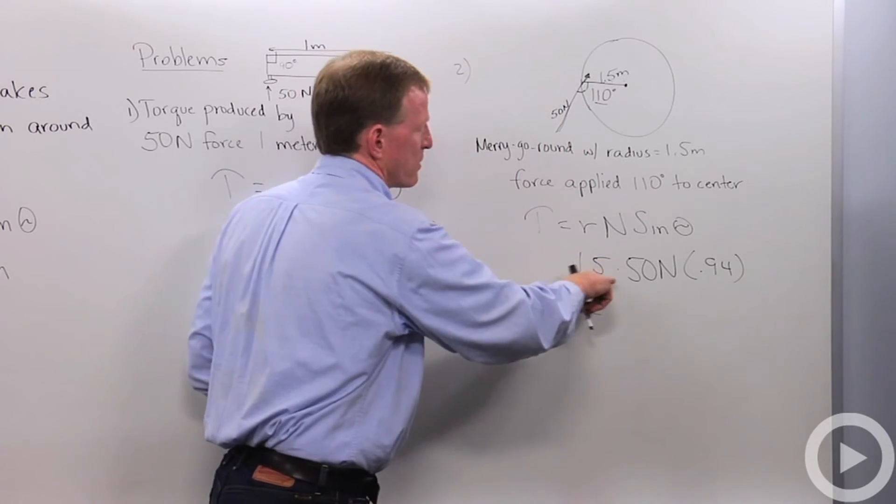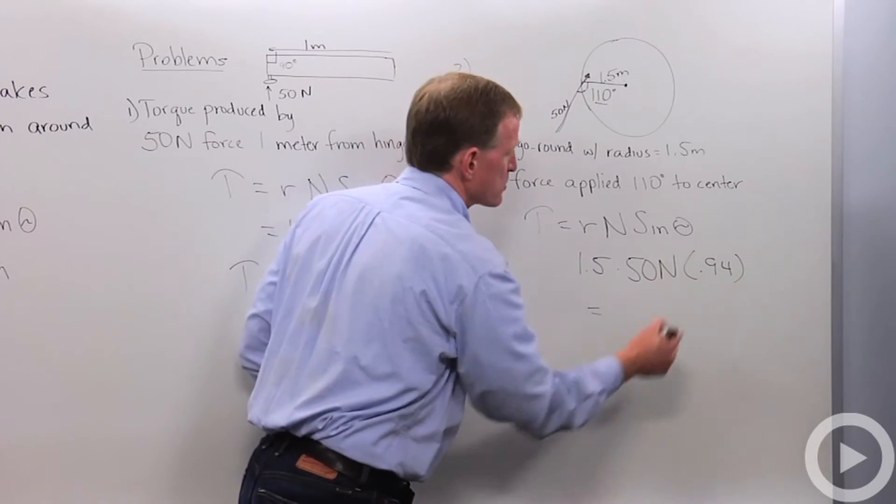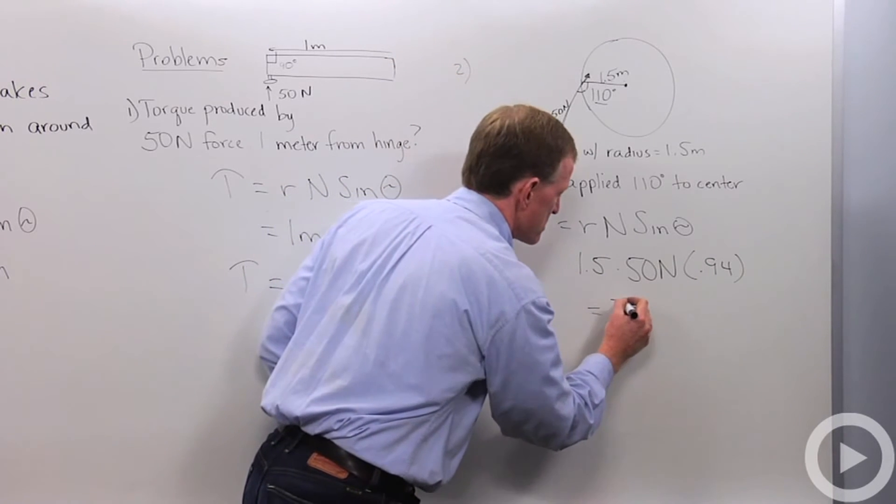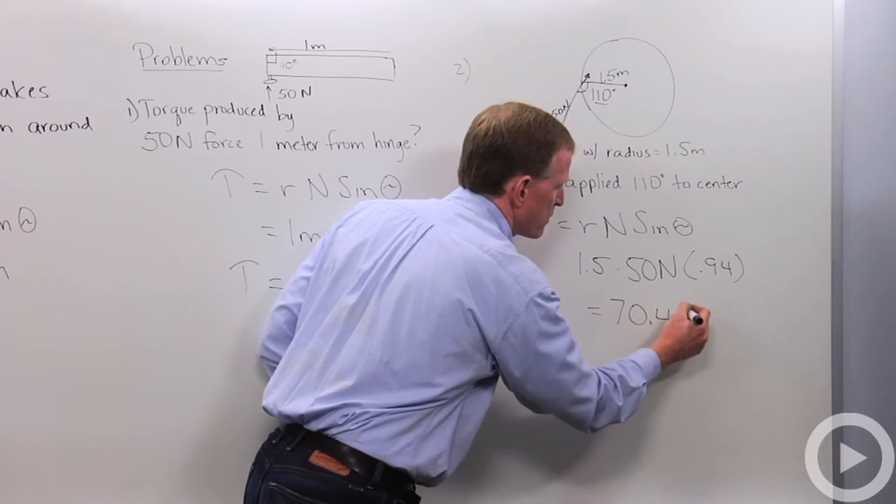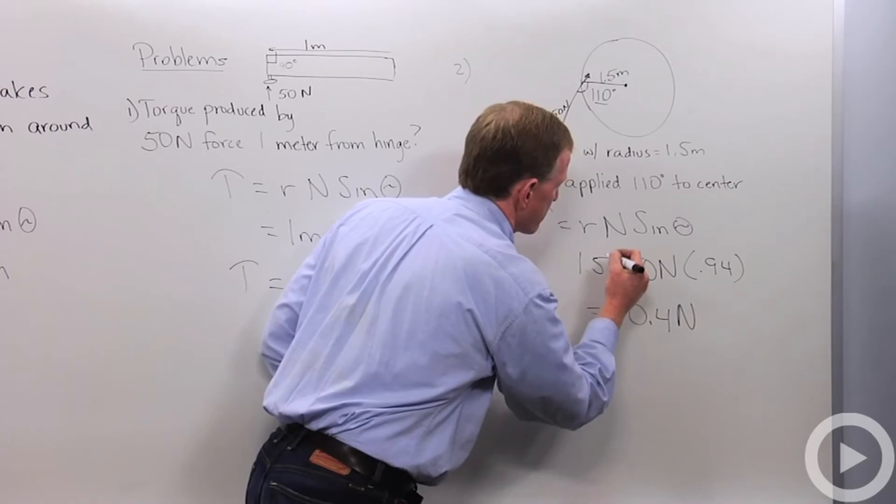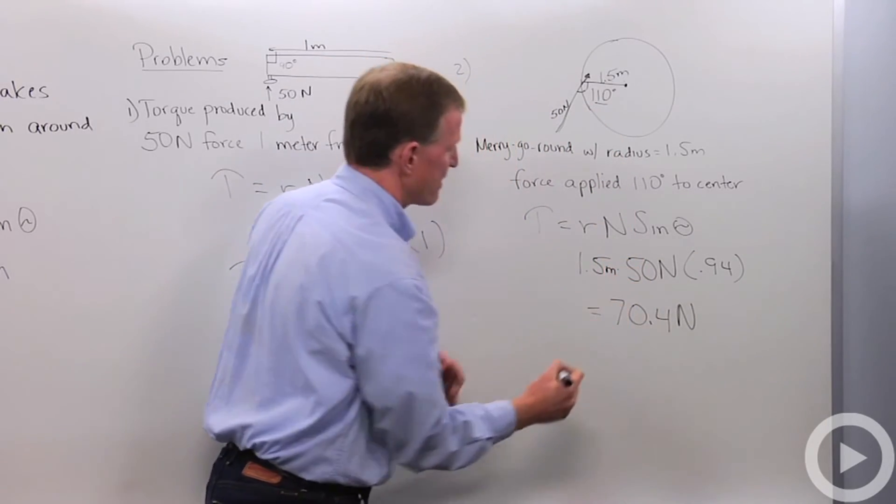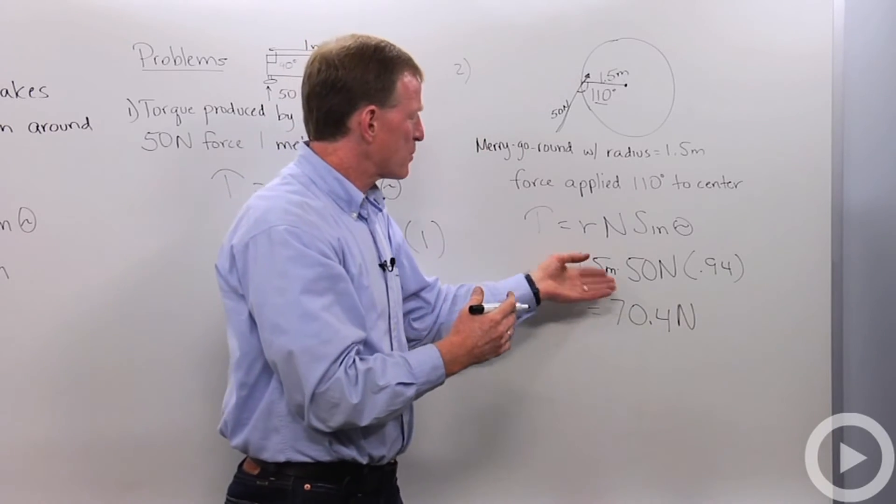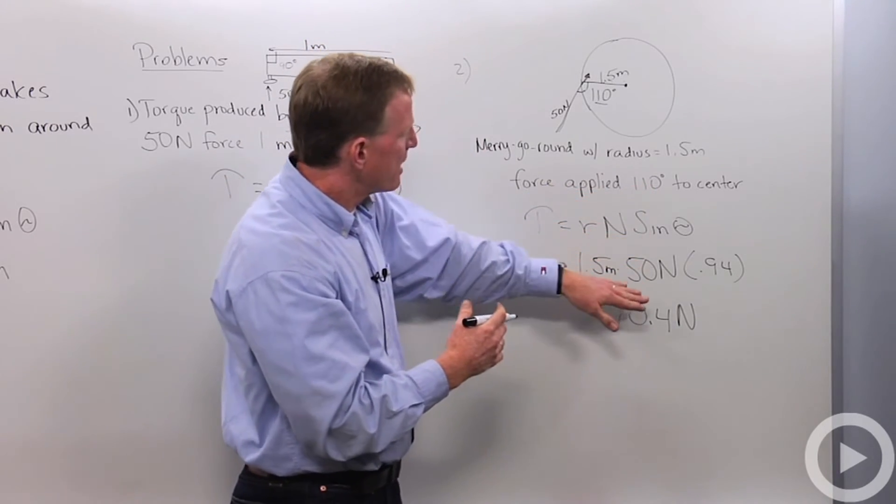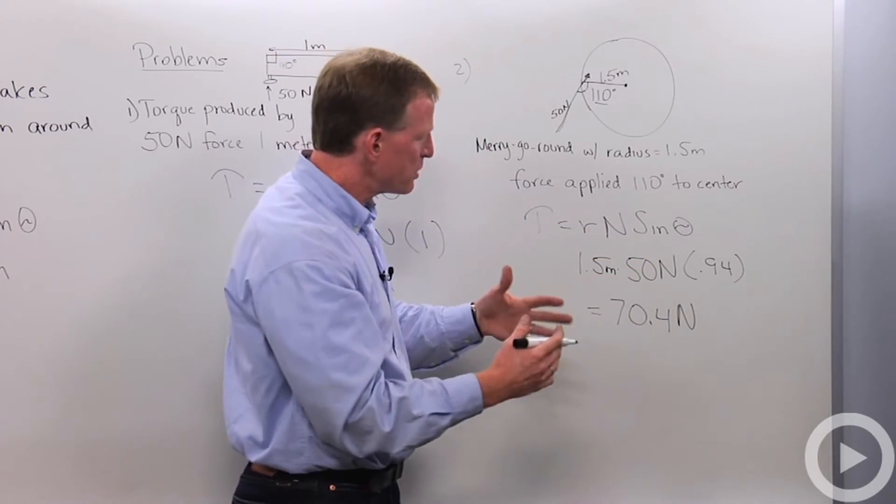So if I, 1.5 times 50 is 75 times 0.94 is 70.4 newton, oh, I forgot my meters there. So let's go ahead and add that, and again, this is quite common where you kind of work through a problem, and then you forget a unit, so just put it back in there.